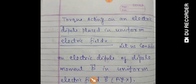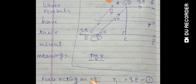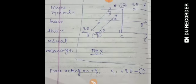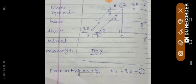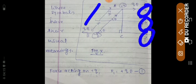In figure X, you can see the electric dipole: two equal and opposite charges, plus q and minus q, are separated by a distance 2a. The electric field lines are parallel to each other, which means the electric field in this region is uniform. So the value of electric field at point A, where plus q is placed, is the same as at point B, where minus q is placed.